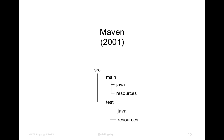The next build system I'd like to introduce is Maven. This one came out of the Java community in 2001, so it's still quite old but not as old as Make, and it's still in use today. It also has a very good idea in it.